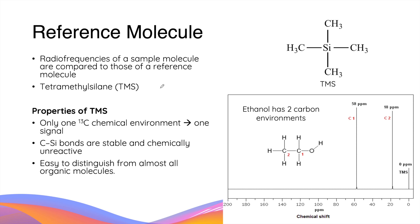When analyzing an organic compound using carbon-13 NMR spectroscopy we always need to analyze a reference molecule. This is usually TMS which is tetramethylsilane. TMS is the most common reference molecule due to the following properties.